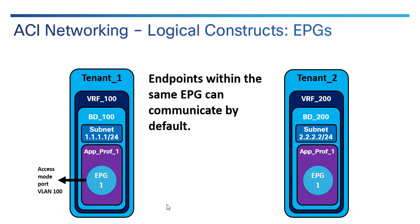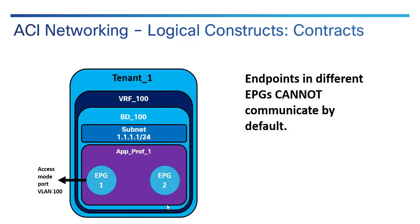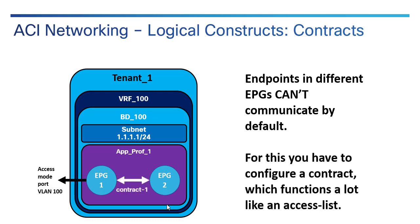All the endpoints and connections you create and place in an endpoint group can communicate by default — there's nothing special you have to do for them to talk. However, endpoints in different EPGs cannot communicate by default. There's an implicit deny any; it's essentially a blacklist with no communication unless you explicitly allow it. In order to have communication between endpoint groups, you have to configure what's called a contract.